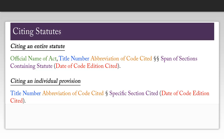You may be required to cite a statute at some point. For citing an entire statute, you would need the official name of the act, the title number, the abbreviation of the code cited, two section symbols, the span of sections containing the statute, and the date of the code edition cited.